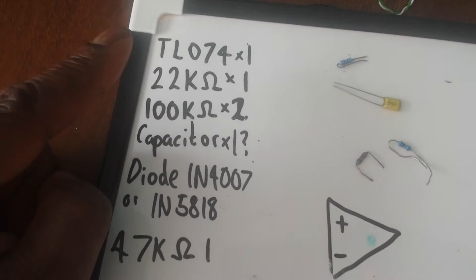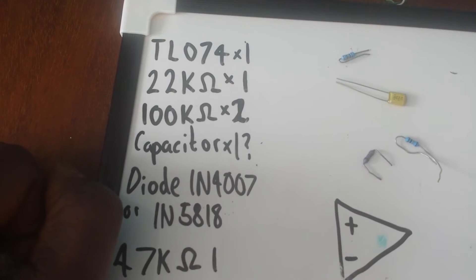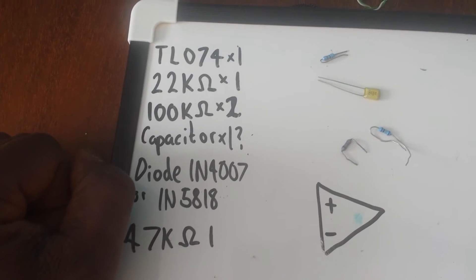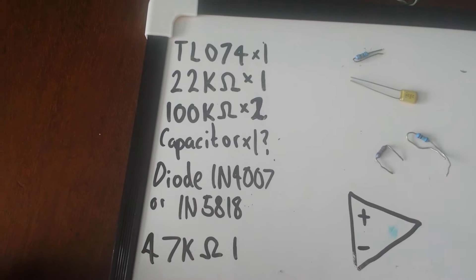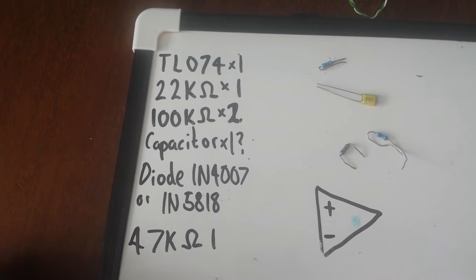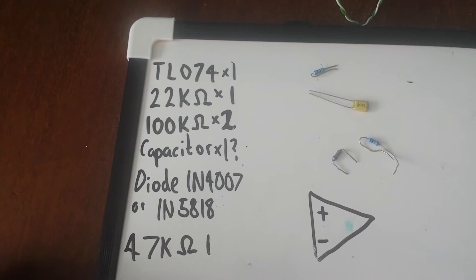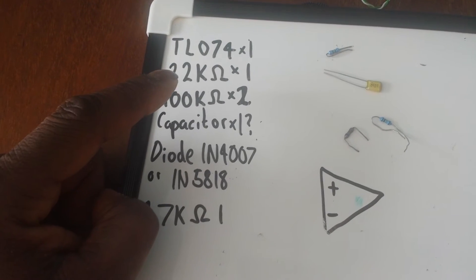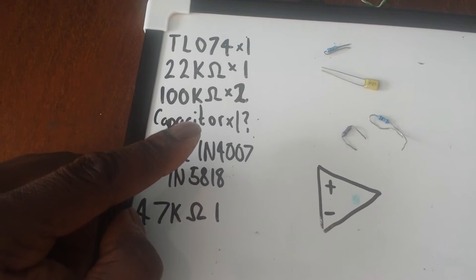Basically all you need is one TL074 quad op-amp. The reason why I used the quad op-amp was because it just meant I could save space on my breadboards from when I actually made the main saw core. And also, what we have is one 22k resistor, two 100k resistors, one capacitor.